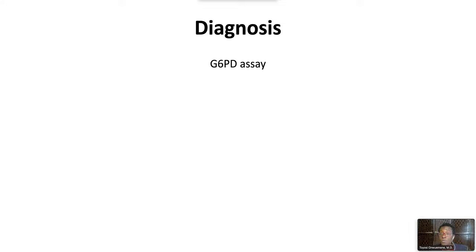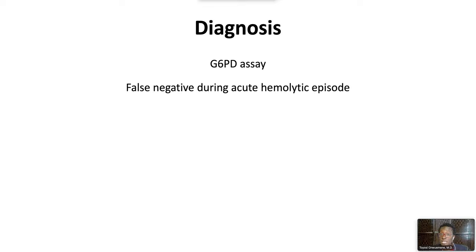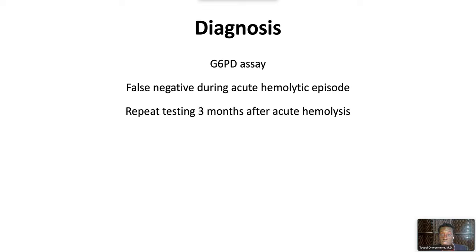Diagnostic testing is based on quantitative measurements of G6PD activity in a population of red blood cells. A false negative result may occur in the setting of an acute hemolytic episode because the RBCs with the most severely reduced activity will have hemolyzed. For this reason, repeat testing is recommended from 6 weeks to about 3 months after an acute hemolytic episode. Confirmatory testing using molecular, genetic, or DNA methods is also available, but not routinely used.